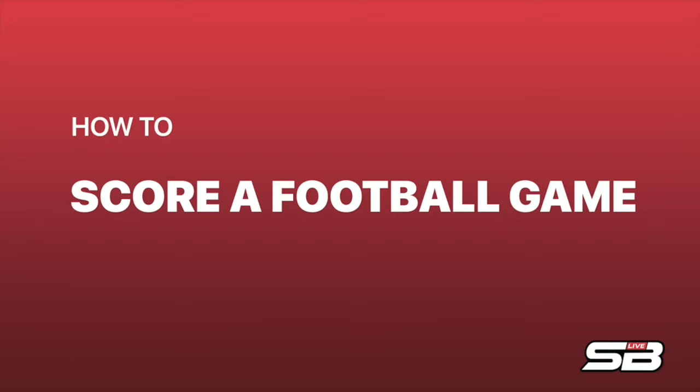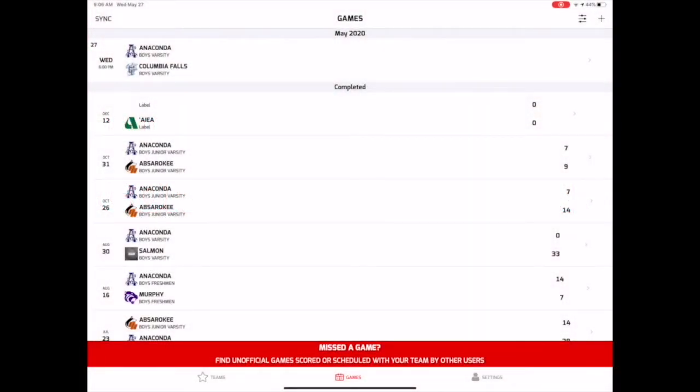To use Digital Scorebook, you must first be the owner of a school or team, or have been invited by a school or team owner to help manage a team. If you've already created an account in Gameday or on scorebooklive.com and gained access to manage your school or team, just sign into your account and you'll be ready to start using the app. If you haven't claimed your school or teams yet, download the Gameday app and sign up for an account. Once you've created your account and claimed your school or teams, head back to Digital Scorebook to score your game.